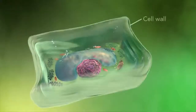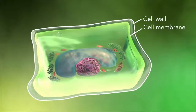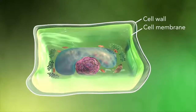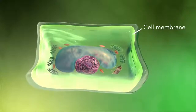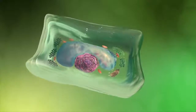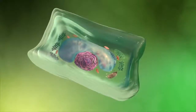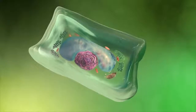Plant cells also have a cell wall outside of their cell membranes that shapes, supports, and protects the plant cell. Animal cells never have a cell wall.